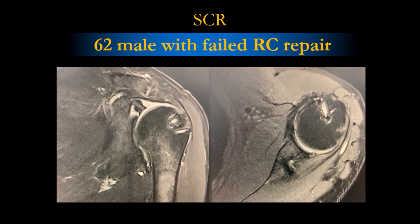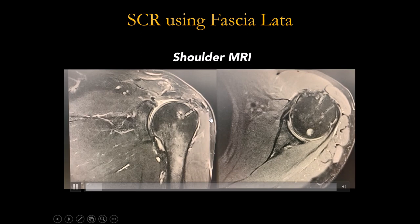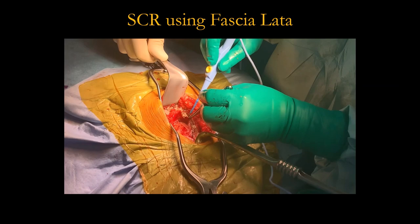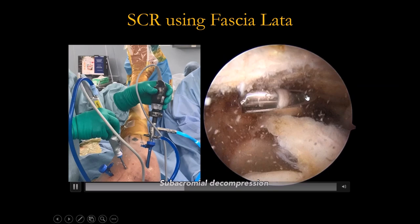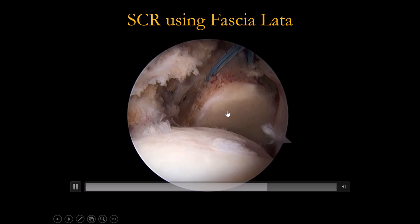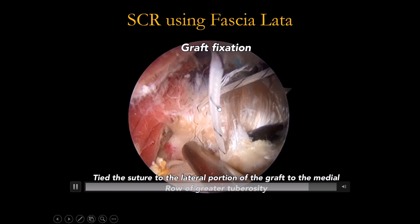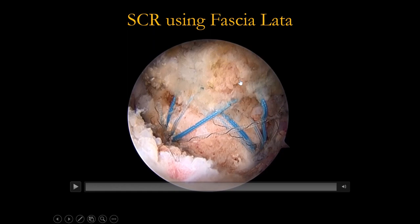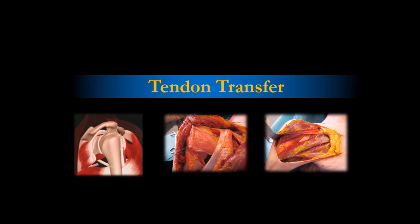One patient with failed rotator cuff repair — retracted and failed. Patient is 60 years old, still young, so I used tensor fascia lata, flipped the graft with a dimension of about 4 by 5 cm. Made a good raw surface on the greater tuberosity, placed anchors, passed the graft in — thick enough — did side-to-side repair to the edges of the cuff, and repaired it in place. Results after surgery were pretty good.